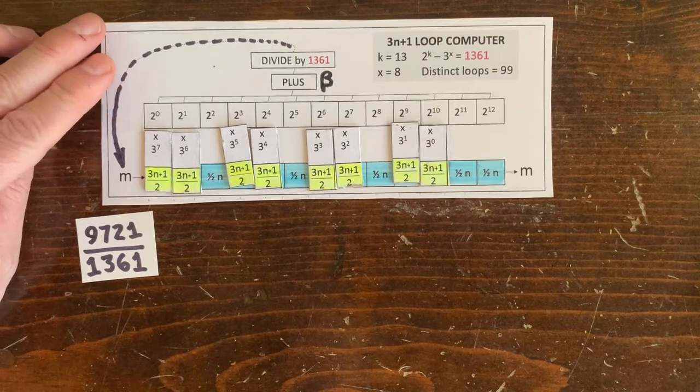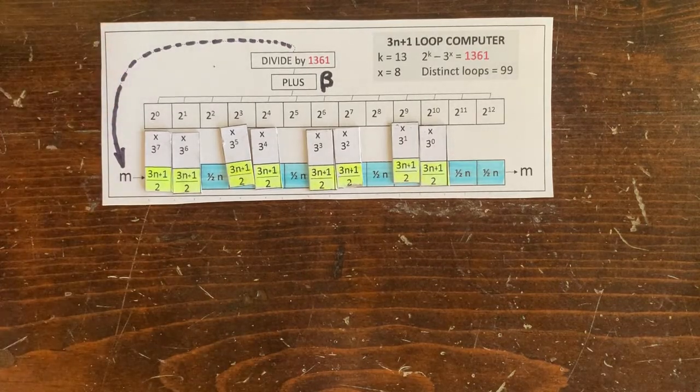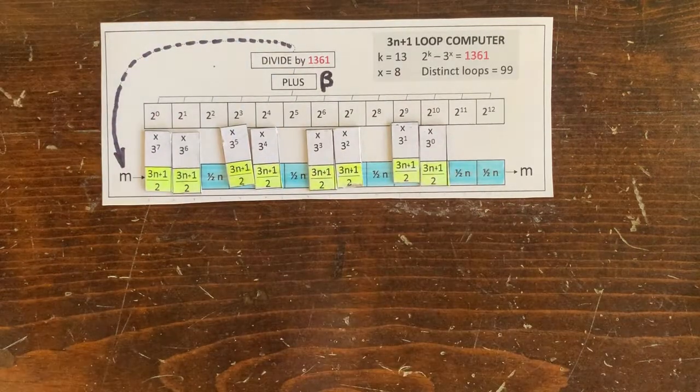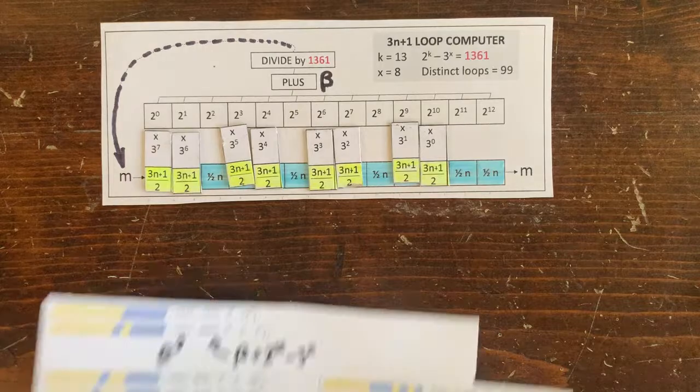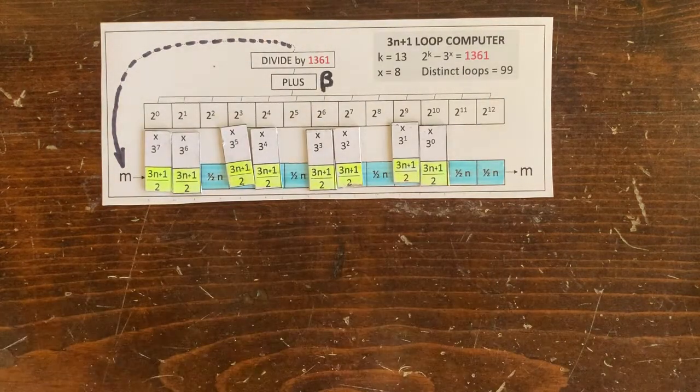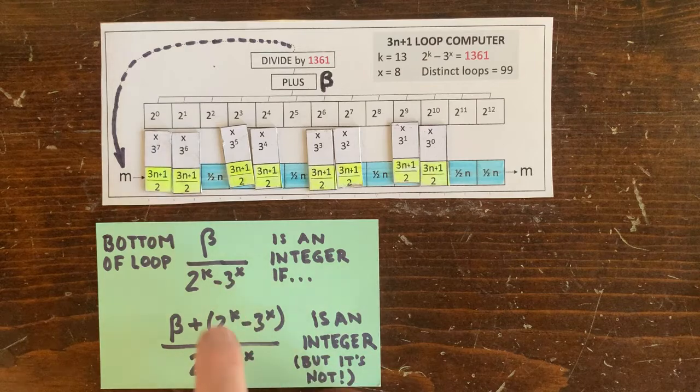How about other types of loops? With k equals 13, x equals 8, there are 99 distinct loops, and here are some of them and their associated beta values. If beta over 1361 is an integer, then we've got the possibility of an integer loop.